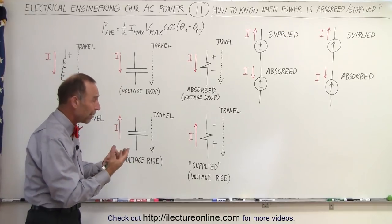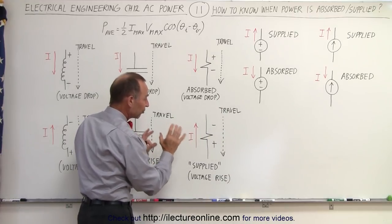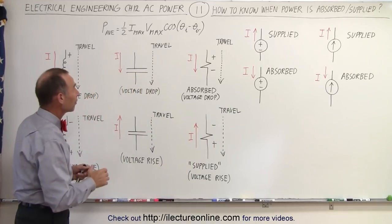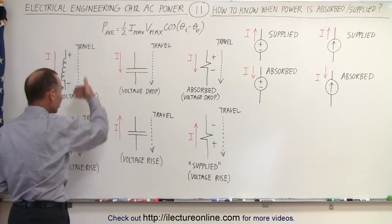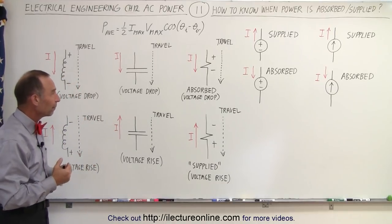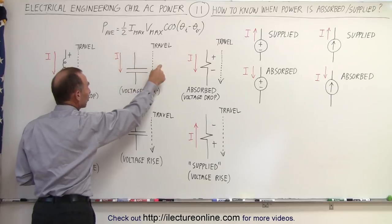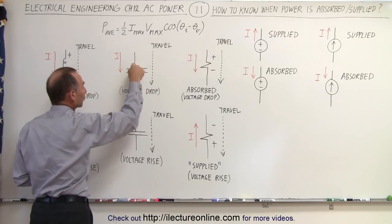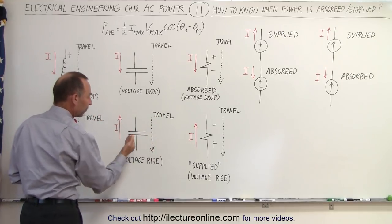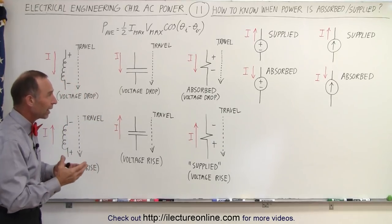Of course, resistors don't actually supply power, but in this case, as we're traveling around the mesh in that direction, it will act as if it supplies power, and therefore there's a voltage rise traveling across that resistor. Now, we've already seen that in the case of capacitors and inductors, there's not going to be any power supplied or power consumed — that's always going to be zero. However, we do want to make sure that as we travel around the mesh, if the current flows in the same direction as the direction of travel across a capacitor, we will have a voltage drop. If you travel in the opposite direction of the current flow, then we'll have a voltage rise — so that's still the same as it is for resistors.